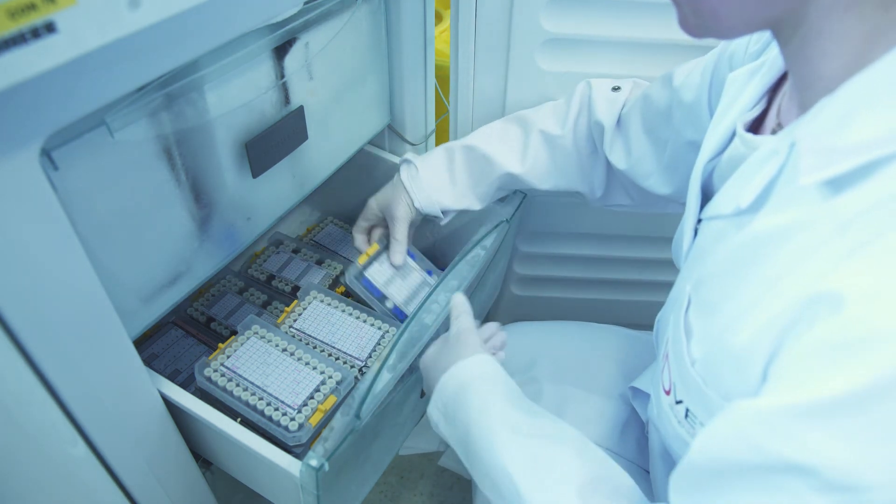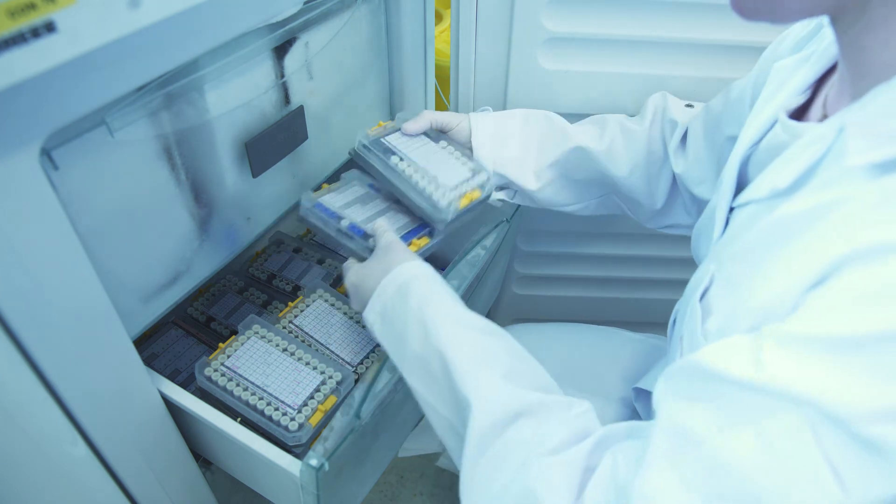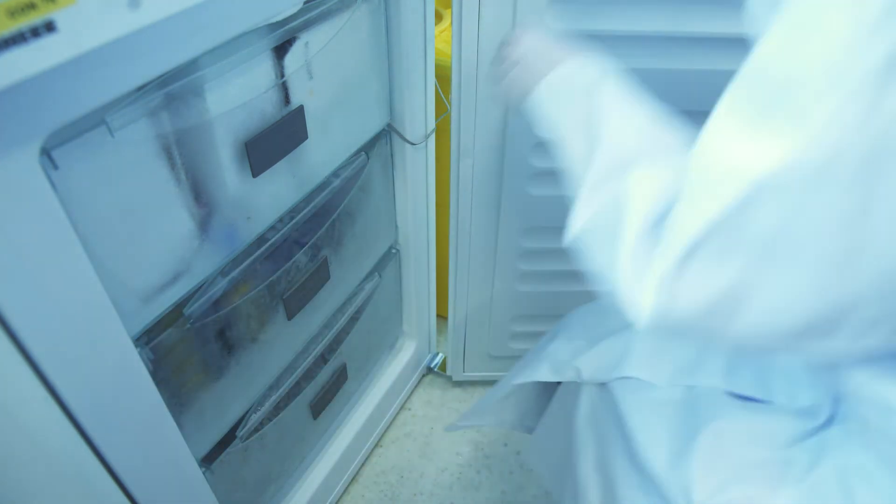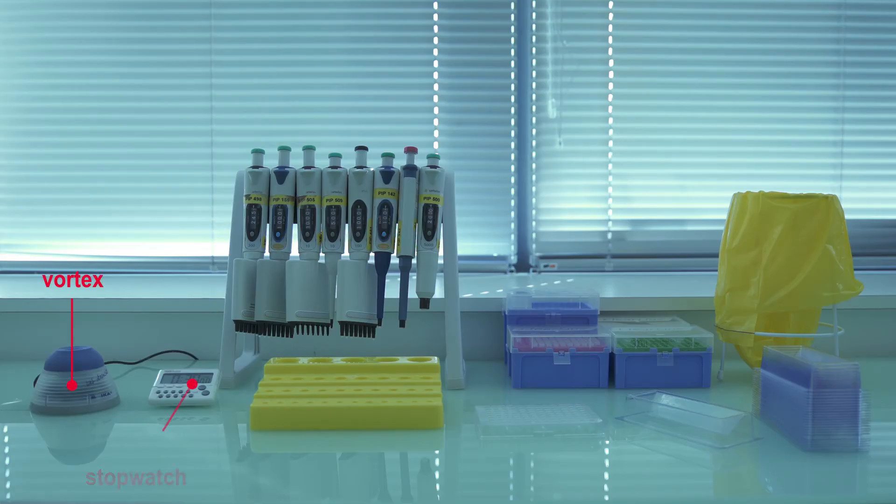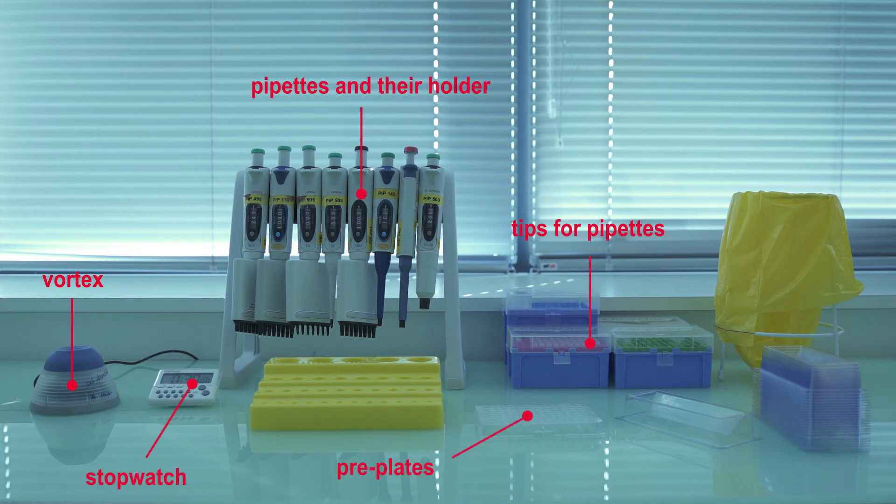IDVET accompanies and advises you in the choice of your equipment and can provide some of this equipment at negotiated tariffs. Here is the list of basic material required for your analyzers: vortex, stopwatch, pipettes on their holder, tips for pipettes, preplates, reservoirs, bin.